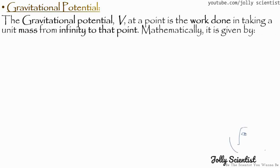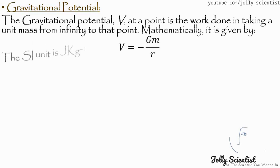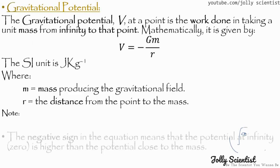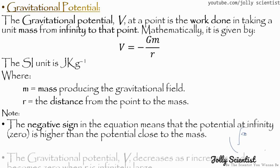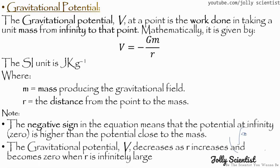The gravitational potential V at a point is the work done in taking a unit mass from infinity to that point. Mathematically, it is given as V equals negative G times M divided by R. Its unit is joules per kilogram. Note: the negative sign means that the potential at infinity is higher than the potential closest to the mass; the gravitational potential V decreases as R increases and becomes zero when R is infinitely large.